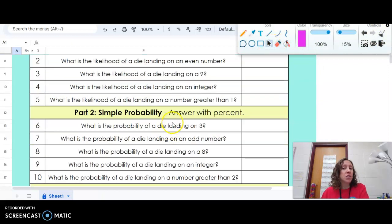Let's scroll down a little bit. For part two, you need to answer with a percent. What is the probability of a die landing on three? A die has six sides, one of them is the number three, so one sixth.